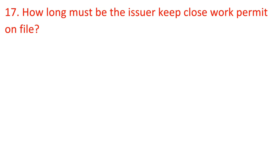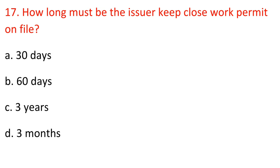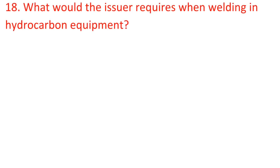Question 17: How long must the issuer keep a closed work permit on file? A) 30 days, B) 60 days, C) Three years, D) Three months. Answer: D) Three months.